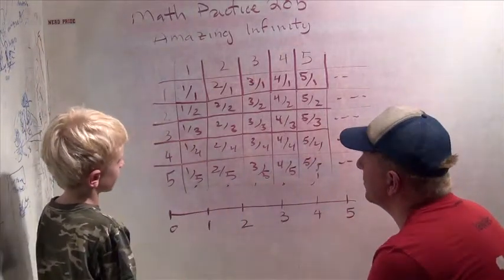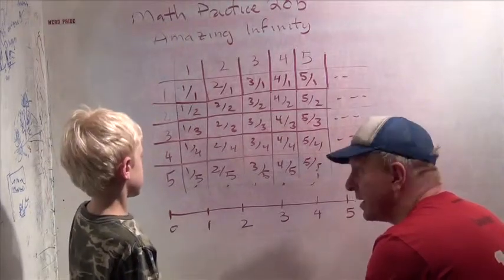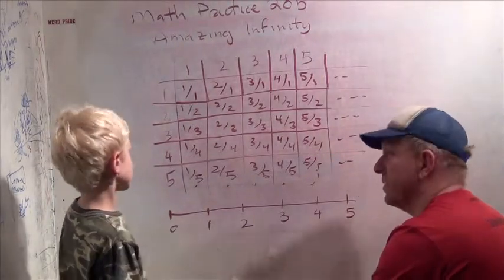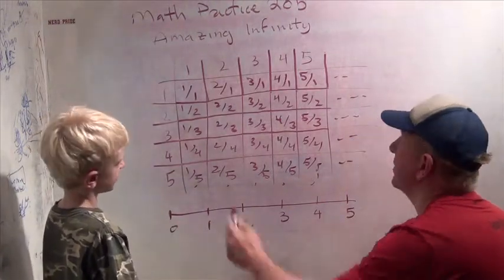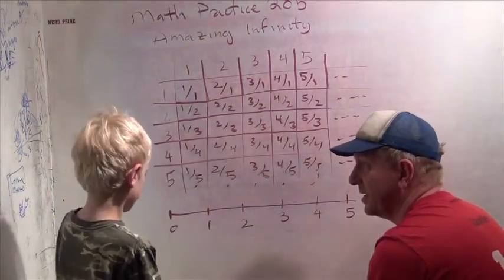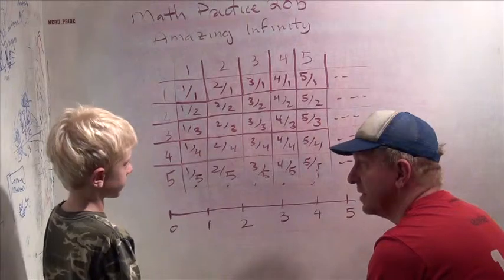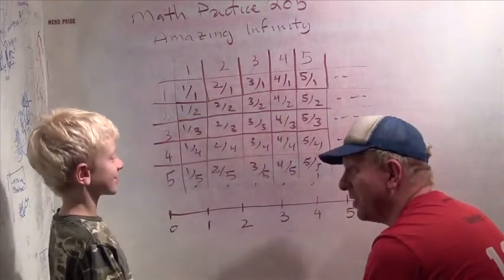Now we have this cool chart, but it has every single fraction you can make in it. Because if you think of a fraction, just tell me what it is. 10 fifths. That's going to be go over 10, down 5. What's another fraction? 25 sixteenths. Okay, you're going to go over 25, down 16. So we've got all of them, right?